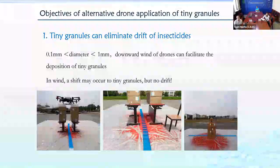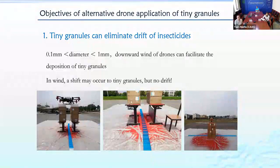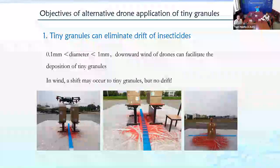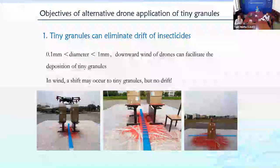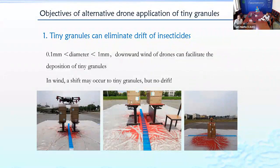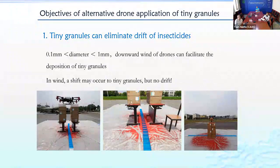To solve the problems of drone spraying, we developed an alternative application using tiny granules. The advantages of tiny granules are: first, they can eliminate the risk of drift. As you can see in the picture, in wind a shift may occur to tiny granules but no drift, and the downward wind of drones can help direct the granules specifically to the target.